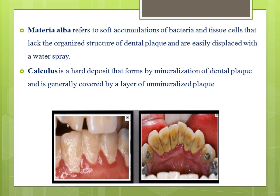Materia alba refers to the soft accumulation of bacteria and tissue cells that lack the organized structure of dental plaque and are easily displaced with water spray. Calculus is a hard deposit that forms by mineralization of dental plaque and is generally covered by a layer of unmineralized plaque.